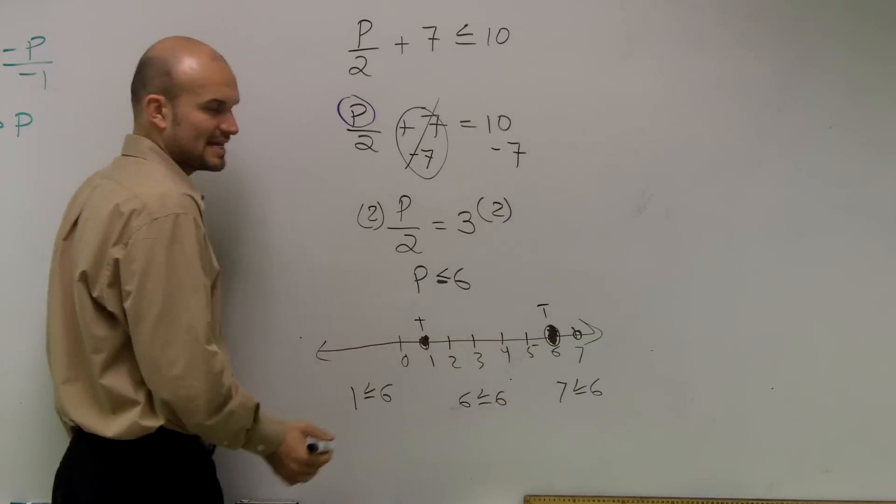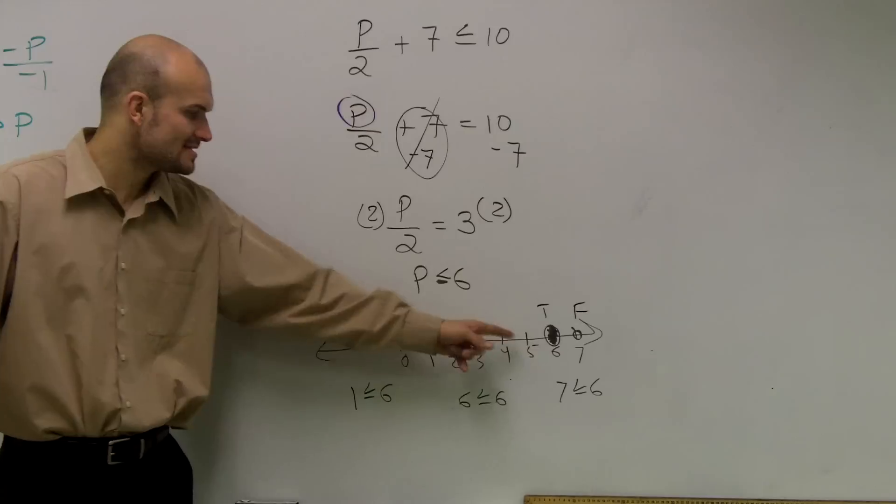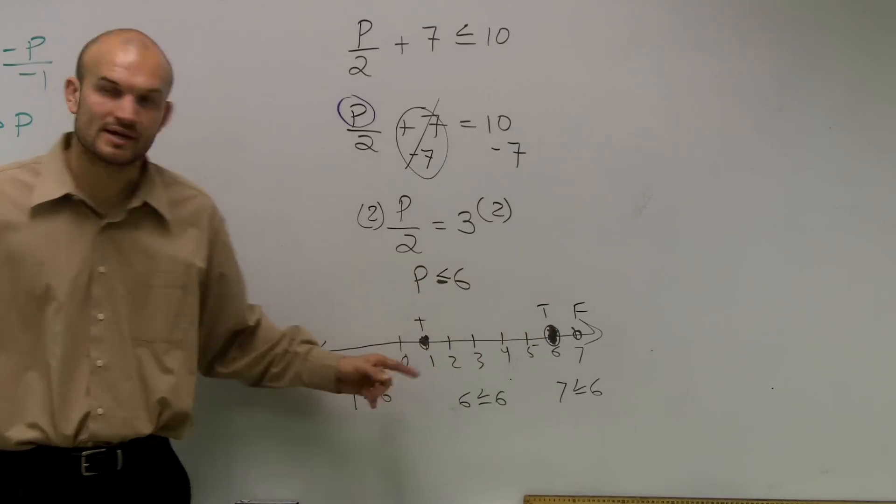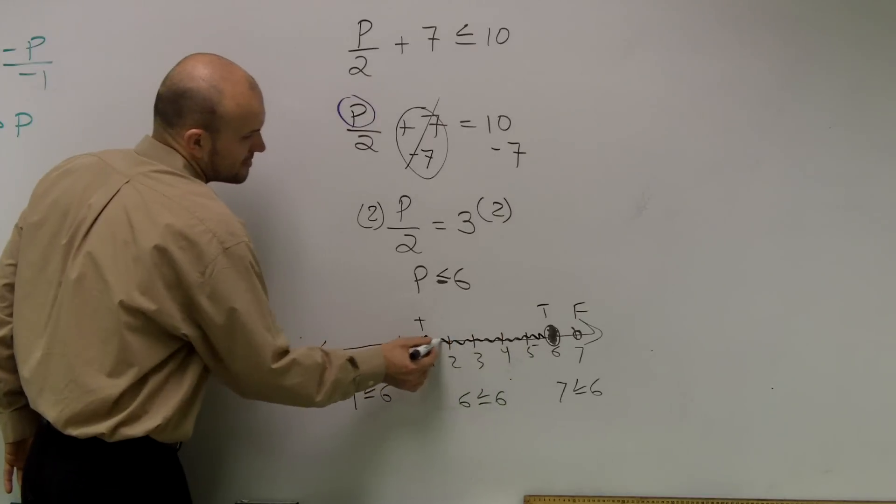Is 7 less than or equal to 6? False. Therefore, now we know that since it's true to the left of my point, all points are going to be true to the left. So we shade it to the left.